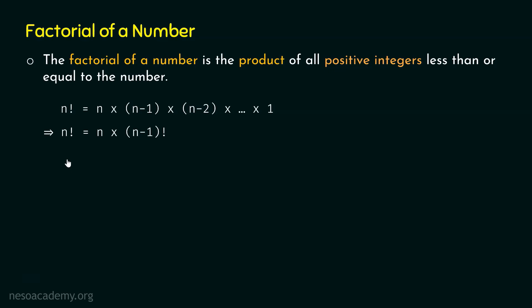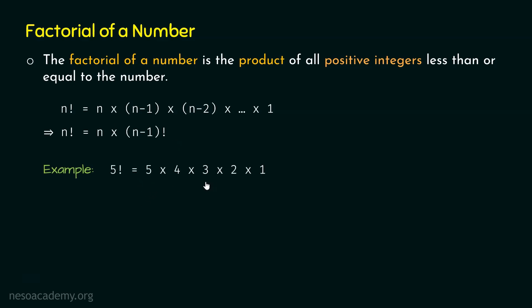Let's see a simple example. If we want to find 5 factorial, applying the formula gives us 5 times 4 times 3 times 2 times 1, which equals 120. So 5 factorial is equal to 120.